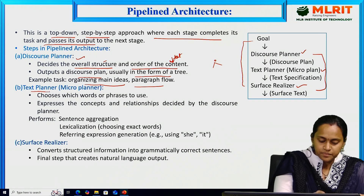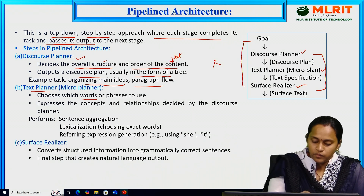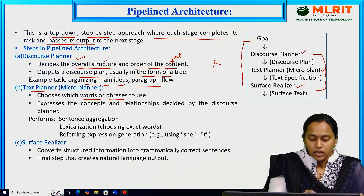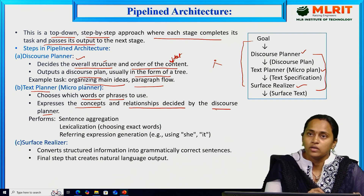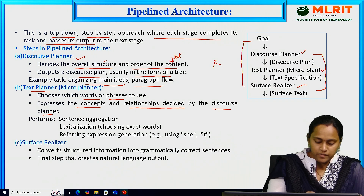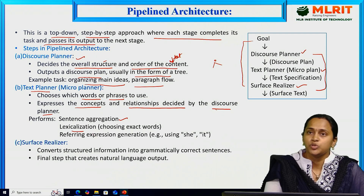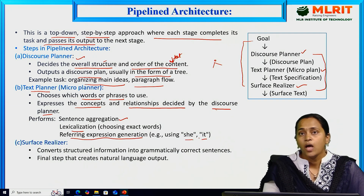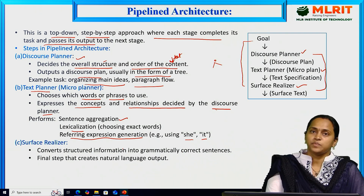The second stage is the text planner, also called the micro planner. It determines which types of words and phrases — such as noun phrases and verb phrases — to use, following syntactic rules. It expresses the concepts and relationships decided by the discourse planner. This includes sentence aggregation, lexicalization (choosing the exact word for a sentence), and referring expressions such as she, he, we, and they — defining which person is being expressed in the sentence.